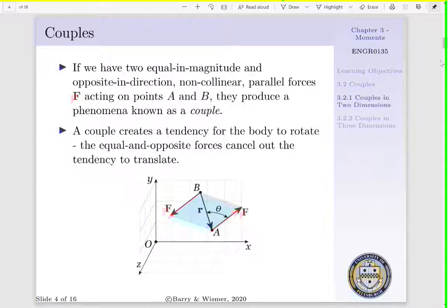For us to define a couple, let's look at the following schematic. Say we have two equal in magnitude and opposite in direction, non-collinear parallel forces denoted as F, acting on A and B. These two forces are going to produce a couple. A couple creates a tendency for a body to rotate, and rotate is the only thing our body will do. For our forces are equal in magnitude and opposite in direction, it will cancel out the tendency for our part to translate.